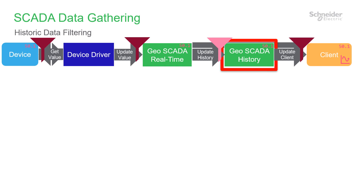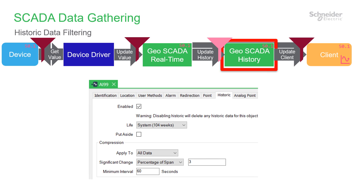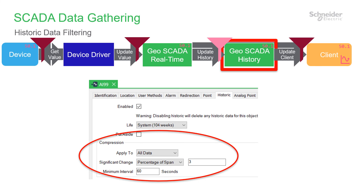Let's move to the next step: the historian. A well-configured system will store only the historic data which is needed for trends and data analytics. The GeoScada historian allows a filter to be set up for every point. This can choose to write history using change size and/or time interval. Here you can see the choice is to filter out changes smaller than 3% and prevent storage of consecutive values within one minute. You can pick values suitable for your application.